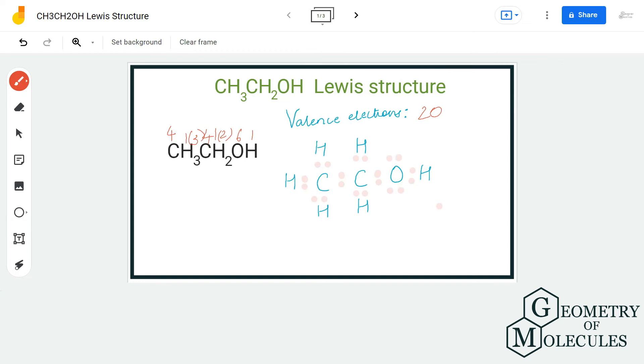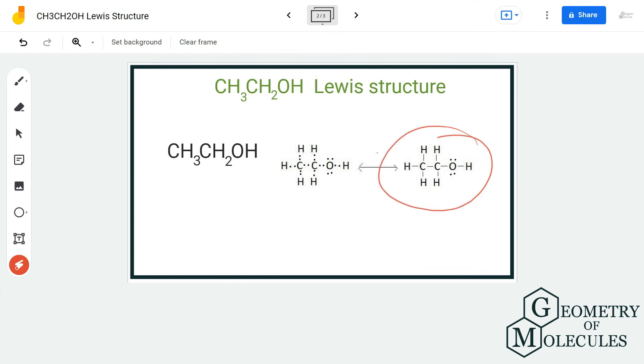Doing that, we will be using up all our 20 valence electrons. Hence, this is the Lewis structure of ethanol, in which there's a single bond formed between these atoms and oxygen has two non-bonding pairs of electrons.